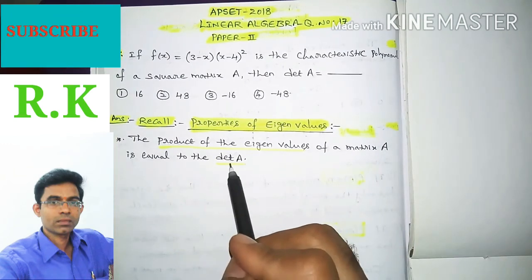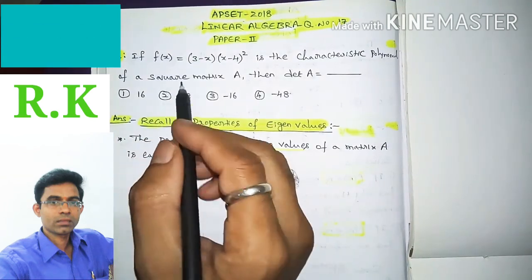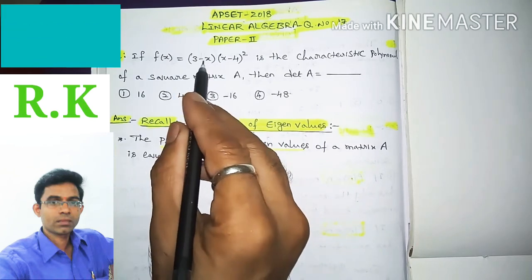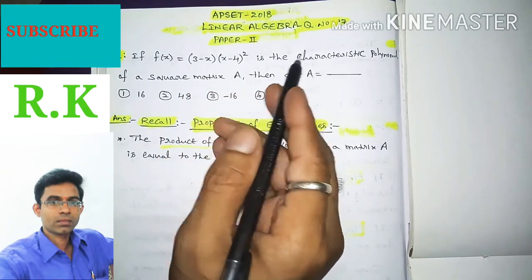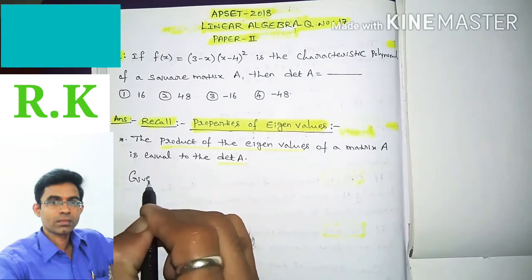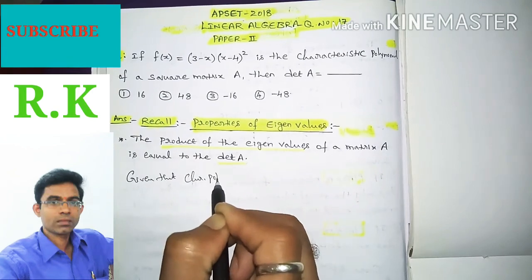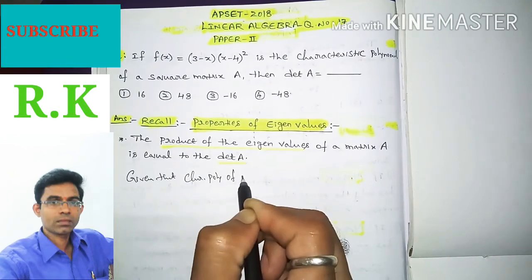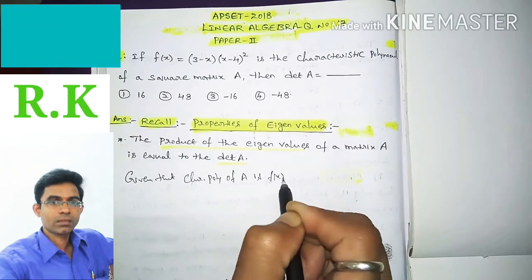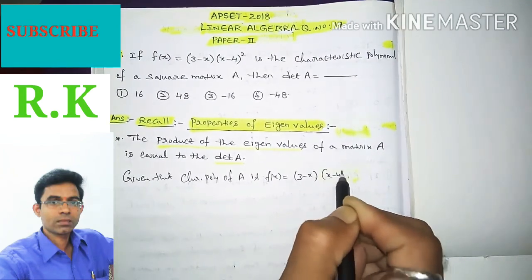Now coming to the problem: here given that f(x) = (3 - x)(x - 4)² is the characteristic polynomial. So given that characteristic polynomial of capital A is f(x) = (3 - x)(x - 4)².